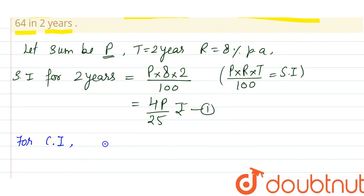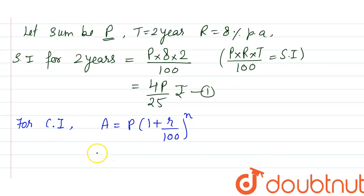for compound interest, first amount will be calculated. A equals P(1 + R/100)^n. By this formula amount will be calculated and then we will calculate compound interest. So here...